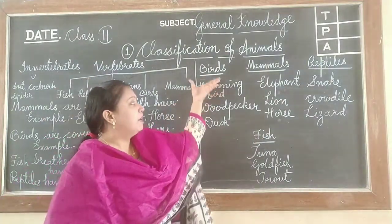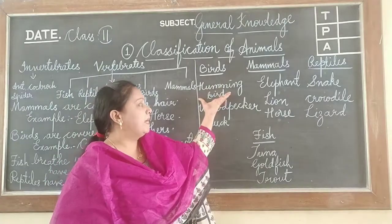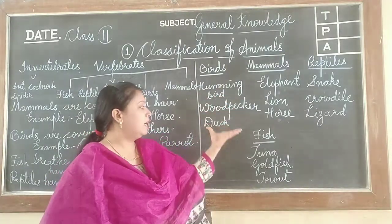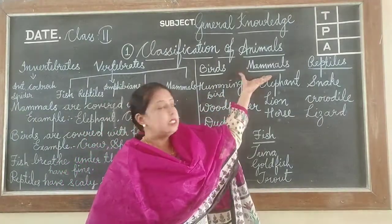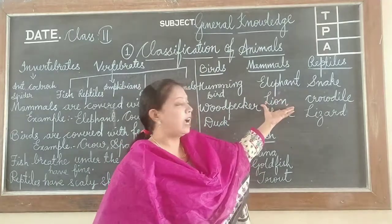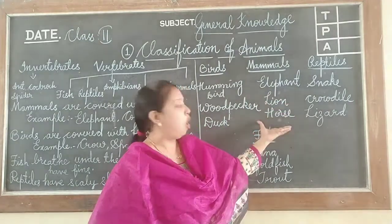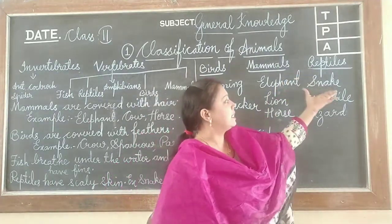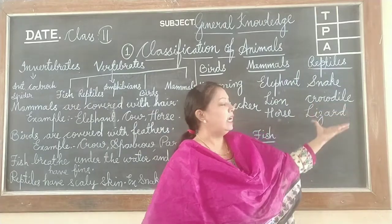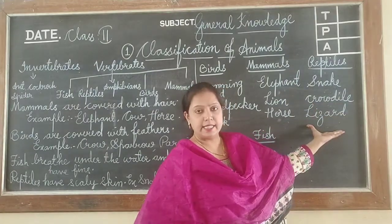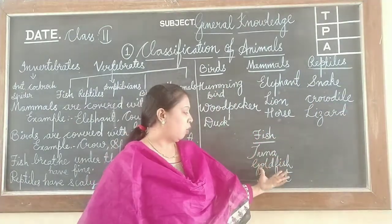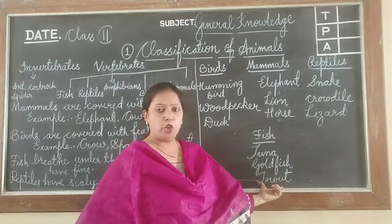In birds: hummingbird, woodpecker, duck. Mammals: elephant, lion, horse. Reptiles: snake, crocodile, lizard. Fish: tuna, goldfish, trout.